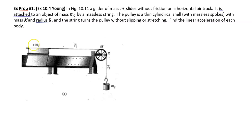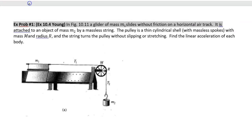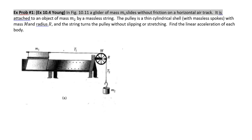We have a glider of mass M1 that slides without friction on a horizontal air track. It is attached to an object of mass M2 by a massless string.